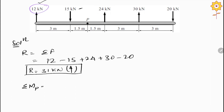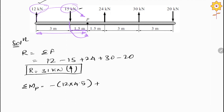For the 12 kilo Newton force, taking the moment about point P, it is in the clockwise direction and the distance is 3 plus 1.5 equals 4.5 meters, so it is negative 12 into 4.5. For the second force, 15 kilo Newton, it is acting anticlockwise and the distance is 1.5 meters, so positive 15 into 1.5.